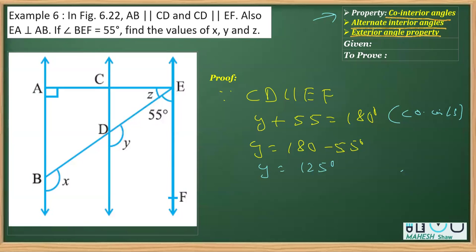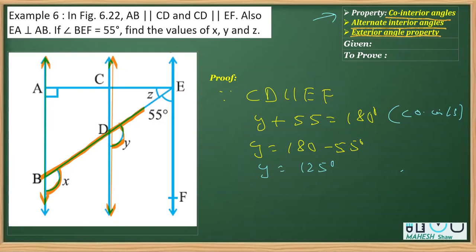Next is to get the value of x. AB is parallel to CD. Considering these two parallel lines with a transversal, you can see that angle y and angle x are corresponding angles. So we can directly write: angle x is equal to angle y, which is equal to 125 degrees. The reason is corresponding angles.